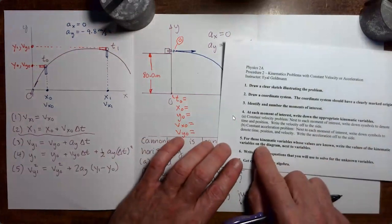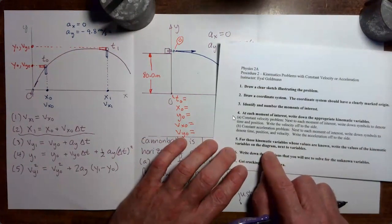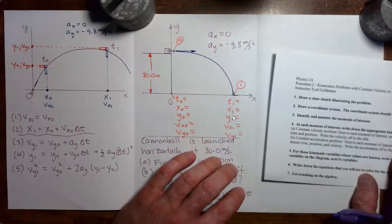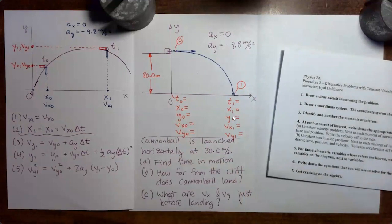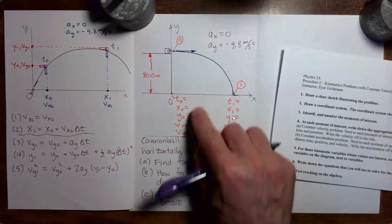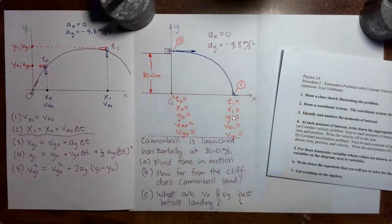Okay, anyways, going on to step five, for those kinematic variables whose values are known, write the values of the kinematic variables on the diagram next to the variables. So why don't you pause the video here? And for those quantities where we already know these values without doing any computation, fill them in and then rejoin the video.